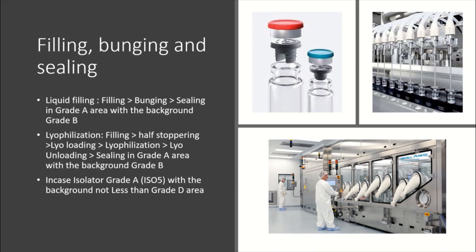There are several stages: filling, stoppering (bunging), and sealing. If it is a lyophilizer process, then the stages are filling, half-stoppering, travel to lyophilizer, lyophilization, unloading, and then sealing. The entire process needs to be done under Grade A zone with the background of Grade B. In the case of isolators, isolators can be installed in Grade C or Grade D areas.